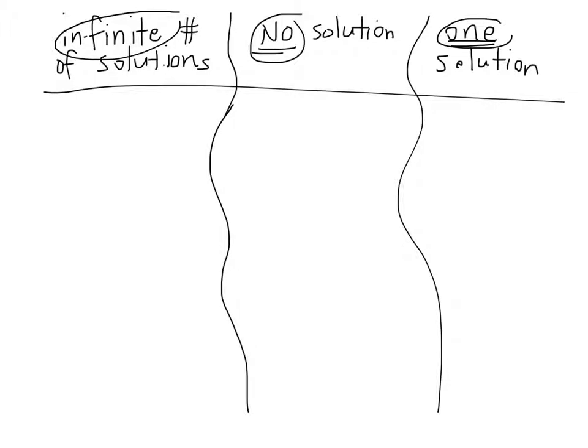So the first one is an example of a linear system, so that's two equations that would represent an infinite number of solutions. So if you were to graph these two lines, they would represent an infinite number of solutions. That means that their point of intersection is infinite.